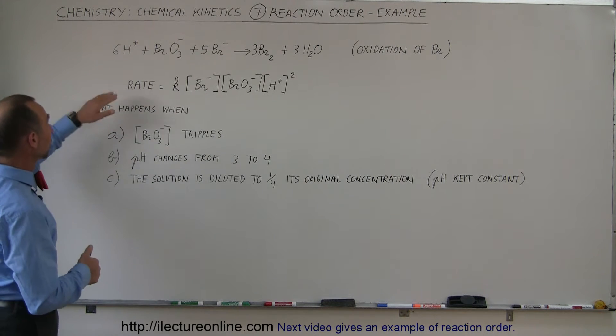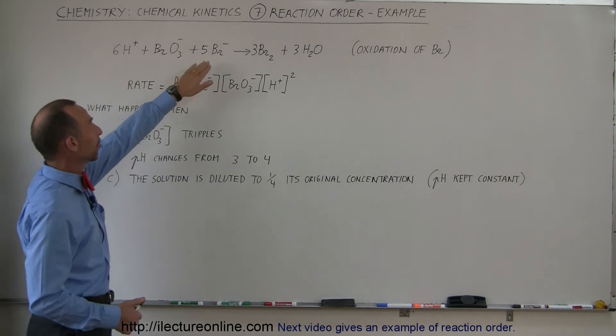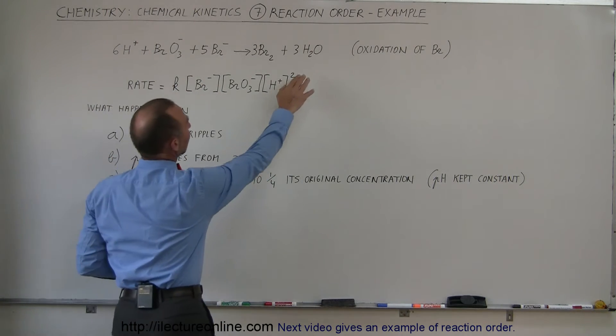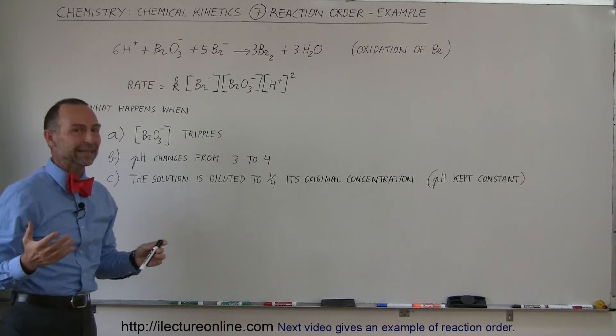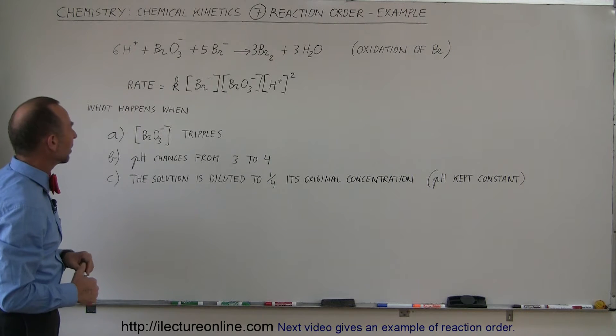So let's say we have a real reaction. Take some hydrogen ions, some bromate ions, some bromine ions, and they react to form bromine and water. That's in an aqueous solution, probably acidic because they have a lot of H+ in there.